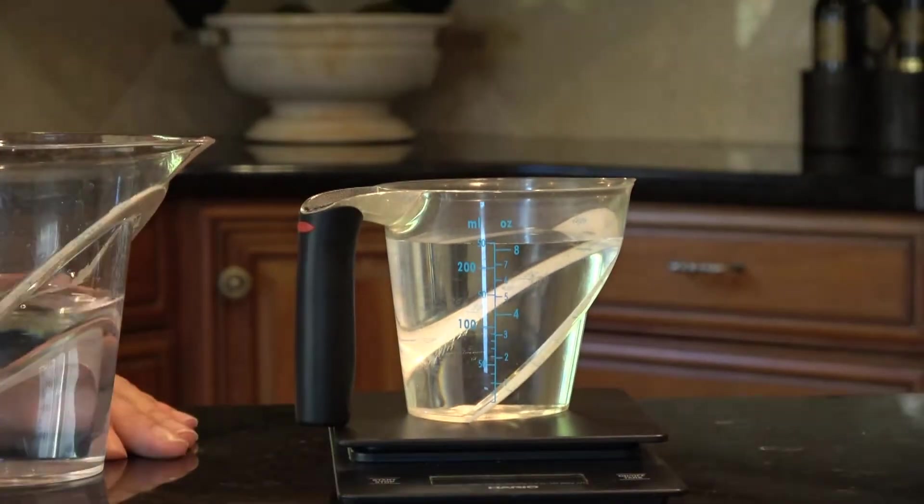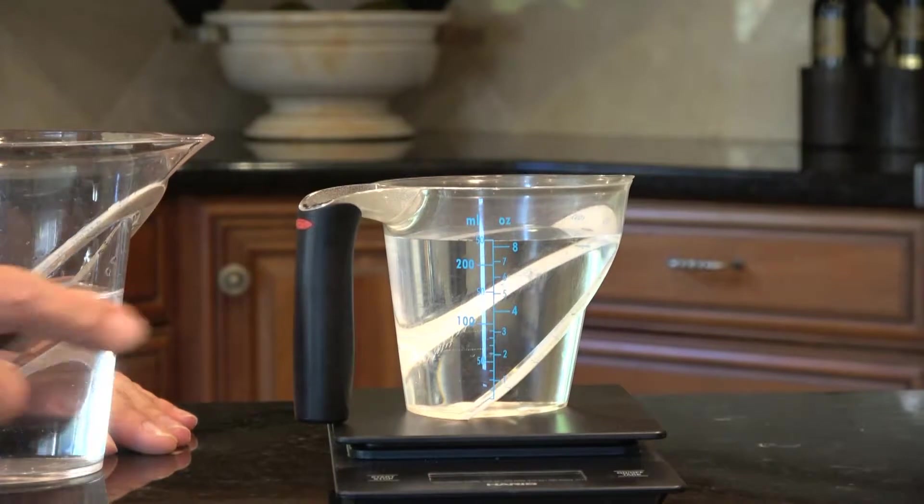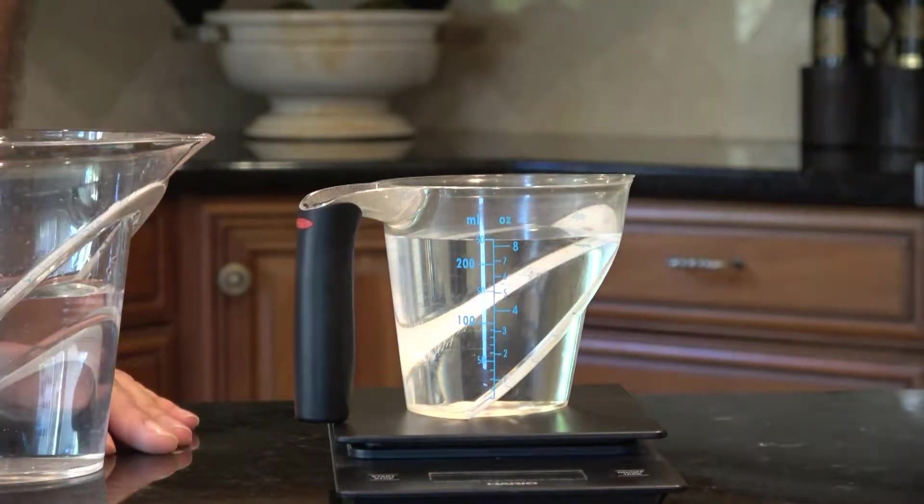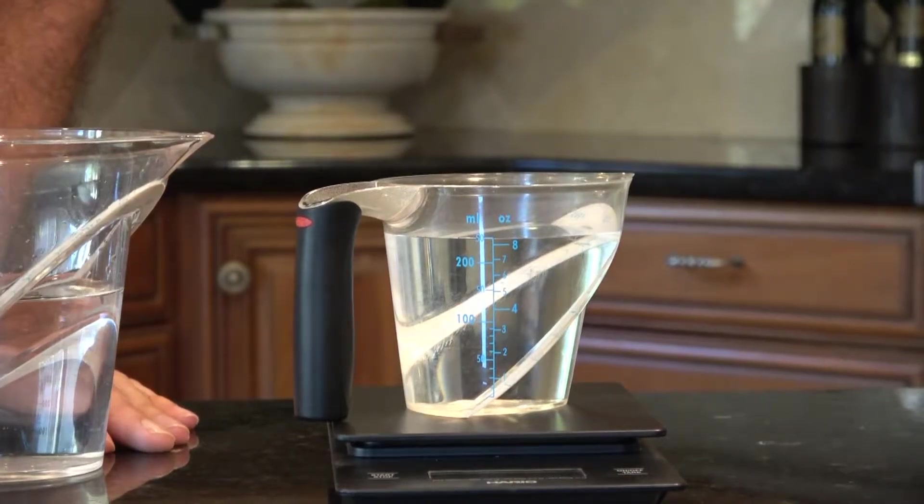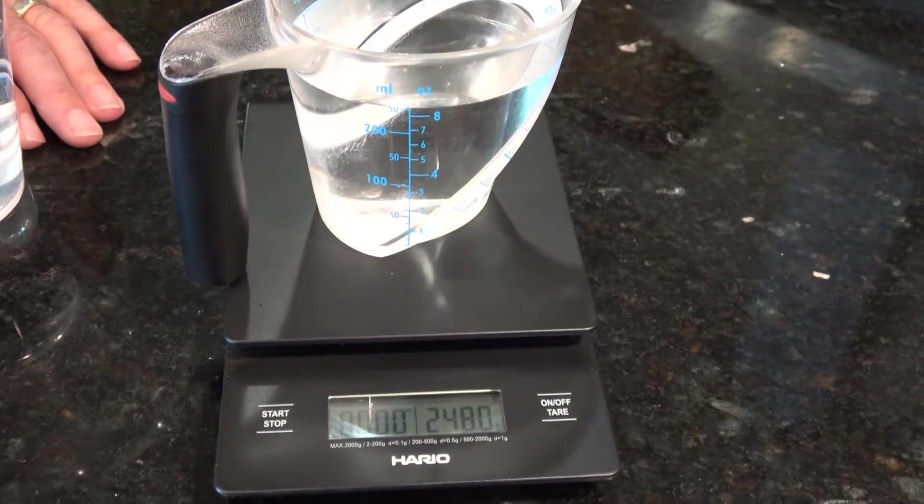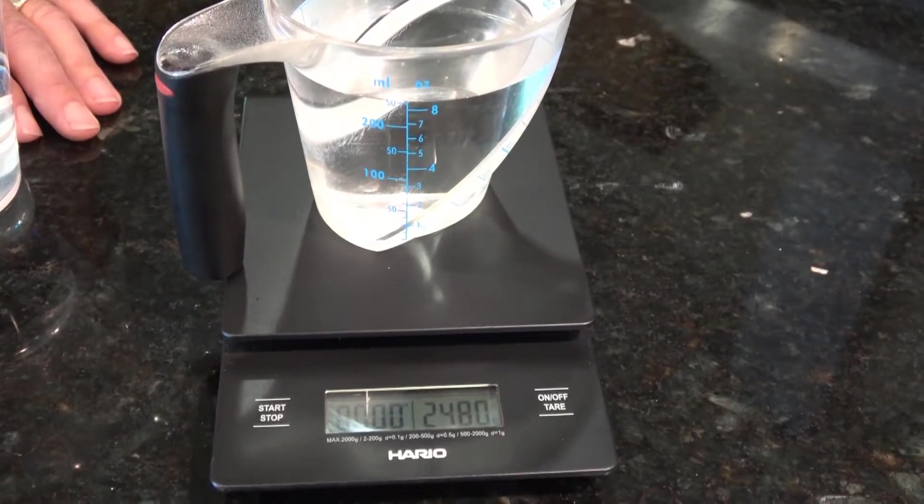Let's see how close that is. Oh, that's pretty good. So I'll stop there. I think I'm about as good as I'm going to get. And now I'll look at the weight of the water. And I see 248 grams. So 250 milliliters of water weighs 248 grams.